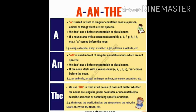Next, a, an, और the articles को हम कहाँ use करते हैं। 'A' is used in front of a singular countable noun — a person, animal, or thing which is not specific। A का use singular countable noun के साथ करते हैं जो कि specific नहीं होता। We don't use 'a' before an uncountable or plural noun.